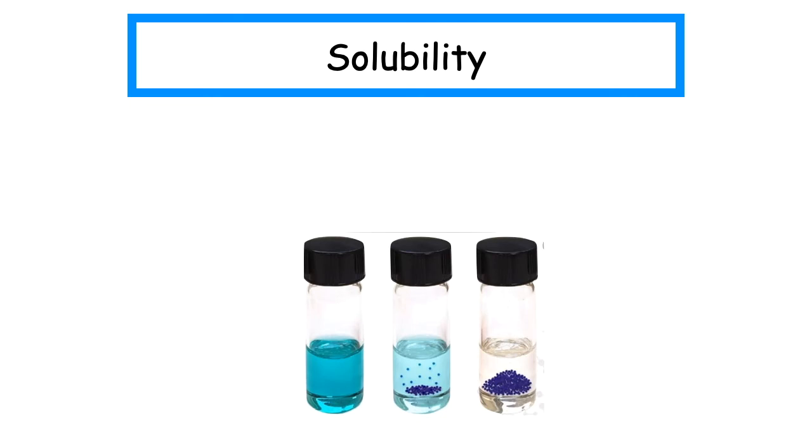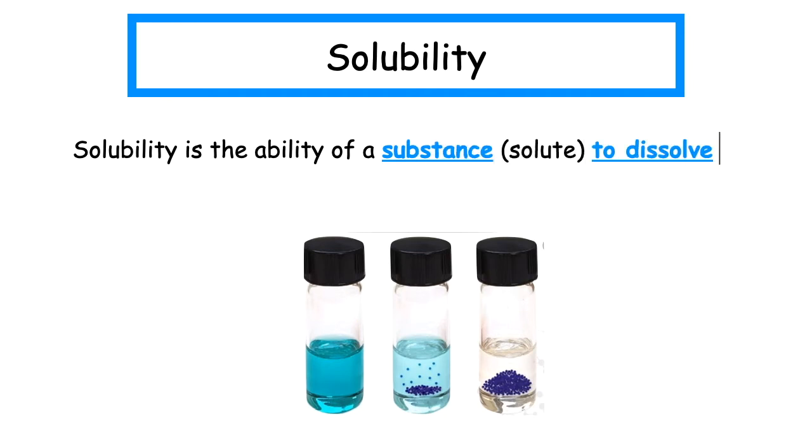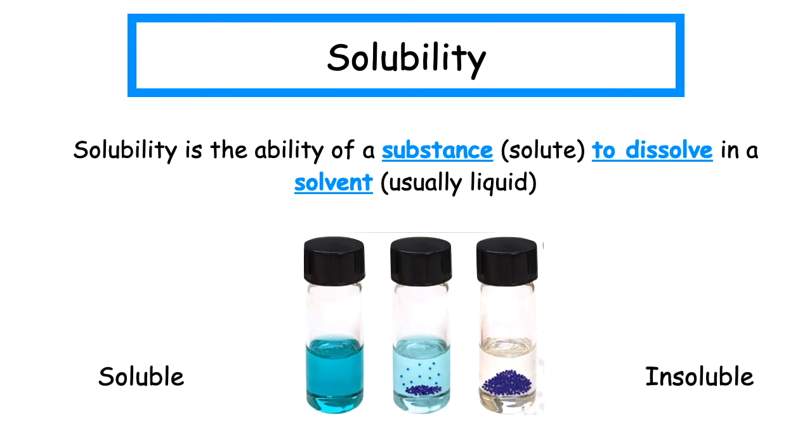The last property we look at is solubility. Solubility is the ability of a substance, which is normally known as a solute, to dissolve in a solvent, which is usually a liquid. If it is able to dissolve, we say that the substance is soluble. And if it is unable to dissolve, we say that the substance is insoluble.